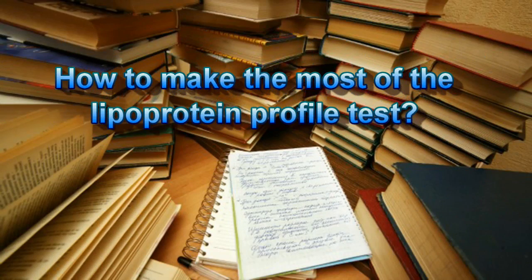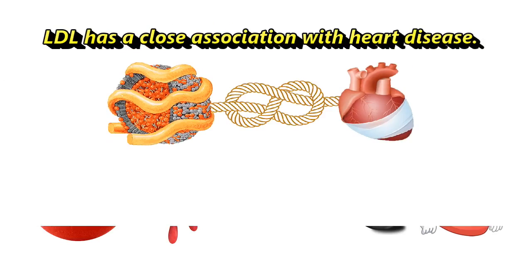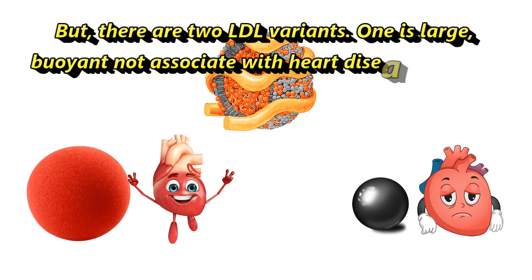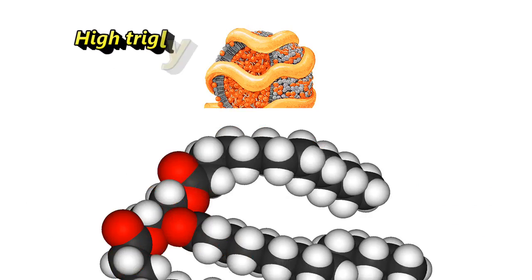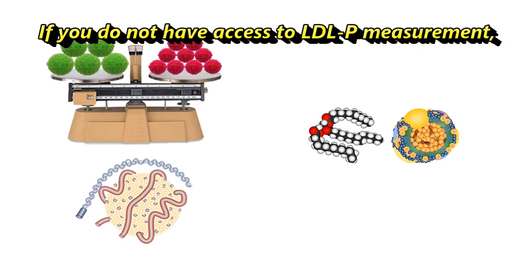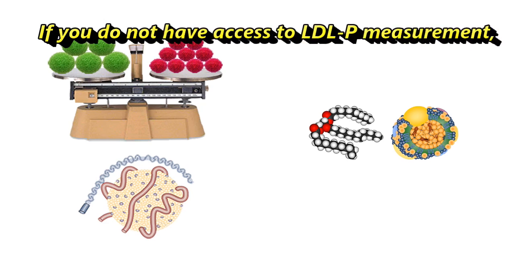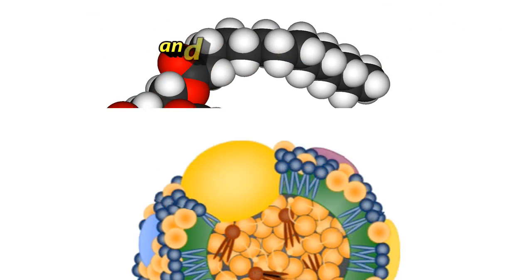How to make the most of the lipoprotein profile test? LDL has a close association with heart disease, but there are two LDL variants: one is large and buoyant, not associated with heart disease; the other is small and dense, associated with heart disease. High triglyceride levels have confirmed risk toward heart disease. If you do not have access to LDL particle measurement, then the next best markers are triglycerides and HDL cholesterol.